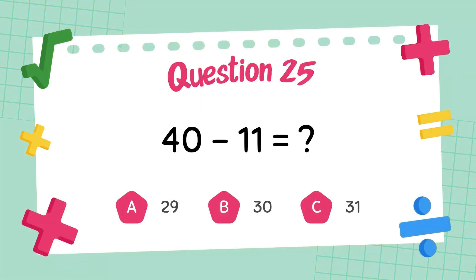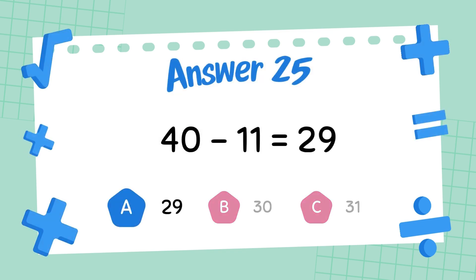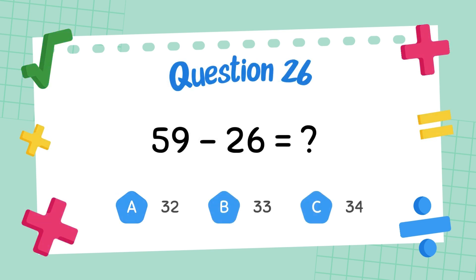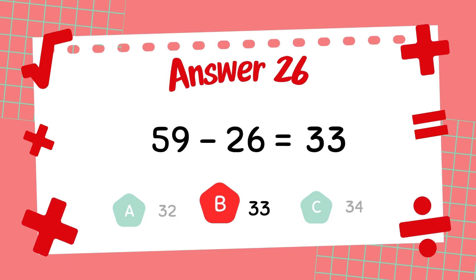What is forty minus eleven? The answer is twenty-nine. What is fifty-nine minus twenty-six? The answer is thirty-three.